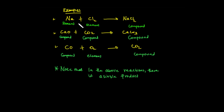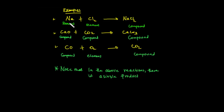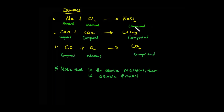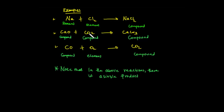So we have: element with element, compound with compound, and element with compound. This is a combination reaction. For example, compound with compound: carbon monoxide reacts with oxygen to give carbon dioxide. Carbon monoxide is a compound, oxygen is also a compound — this gives a single compound product.